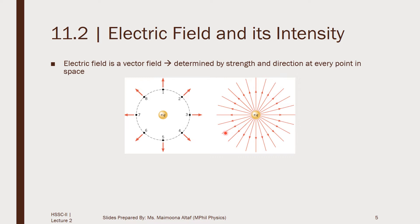Since the lines are closer near to the charge, it means the strength is strong near to the surface of the charge. And as we move away from the charge, these lines tend to move away from each other, which tells us that as we move away, the strength of the electric field decreases. The arrows determine the direction of the field at every point in space.